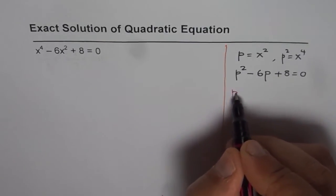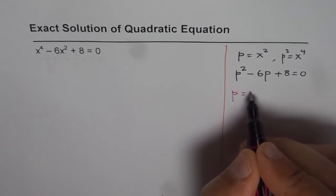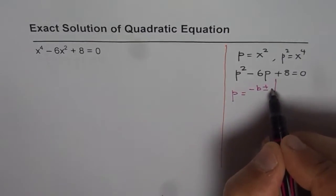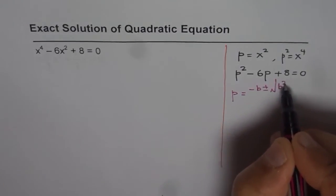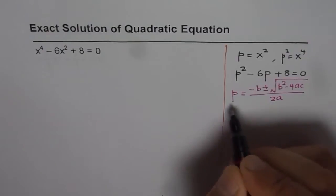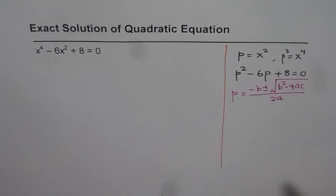So p can be solved as: p equals minus b plus or minus square root of b squared minus 4ac divided by 2a. That is the formula we normally use to solve a quadratic equation. That is the formula we are going to use.